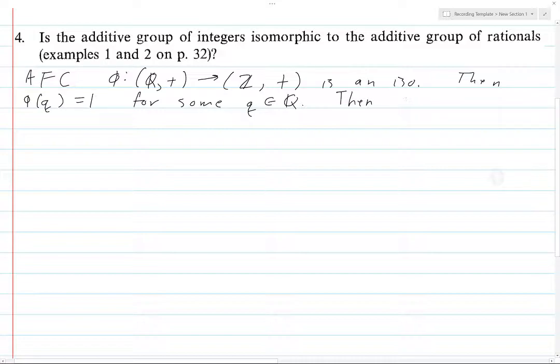So what can we do with that? We know that 2 times φ(q/2) equals φ(q/2) + φ(q/2). Because this is a homomorphism, you can bring the two things inside, and when you add q/2 and q/2 you just get q.